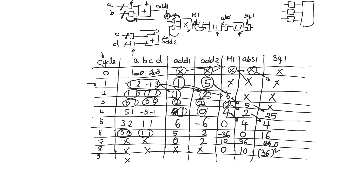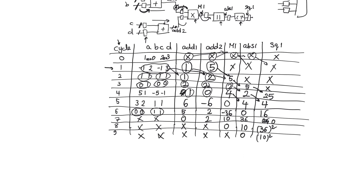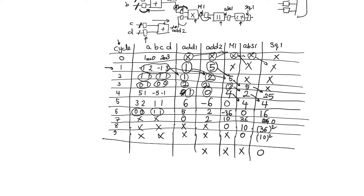On the ninth cycle, rubbish starts to feed in and we have rubbish outputs from add one going to multiply one. Absolute one will calculate the absolute value of zero. Square will calculate the square value of 10. On the tenth cycle, we will calculate only the square value of zero, and everybody else will have rubbish values.